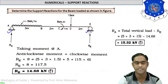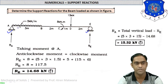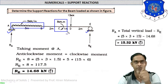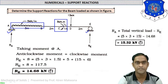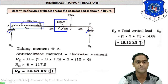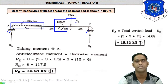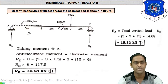Support A is a simple support and support E is a roller support. Now concentrate on the loads. The first load is a UDL of 5 kN/m. The second is a clockwise moment, also known as a couple, with unit kN·m. The third is a point load with unit kN. So: UDL → kN/m, moment → kN·m, point load → kN.